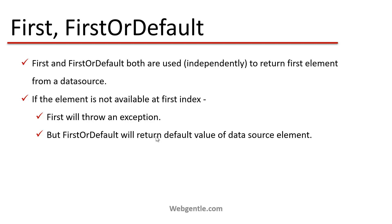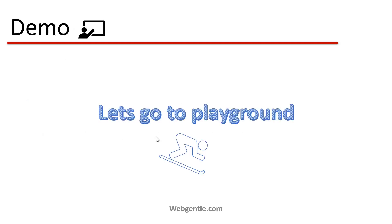The default value depends on the type of elements in your data source. If you have a list of integers, the default value is the default for integer. If you have a list of strings, it returns the default for string. If you have a list of objects, it returns the default for object. When using FirstOrDefault and no element matches your condition, it returns this default value.